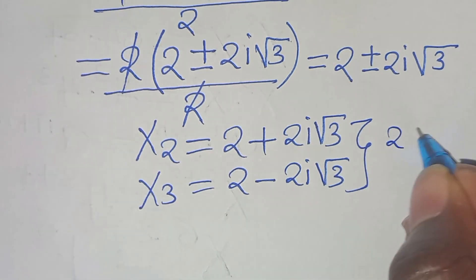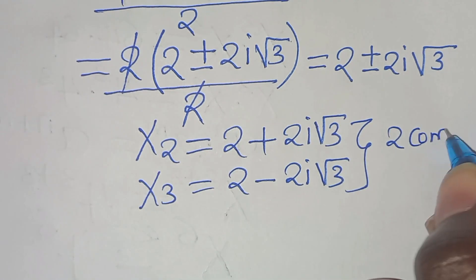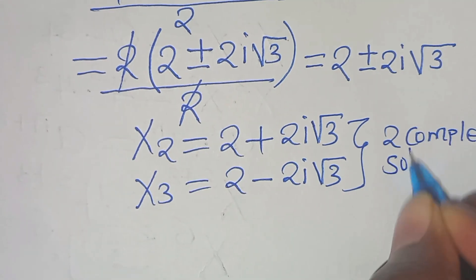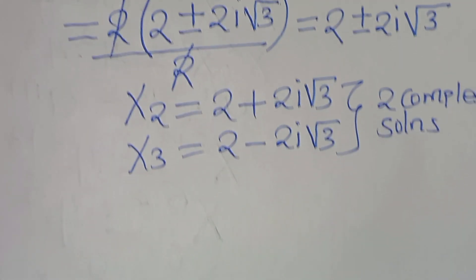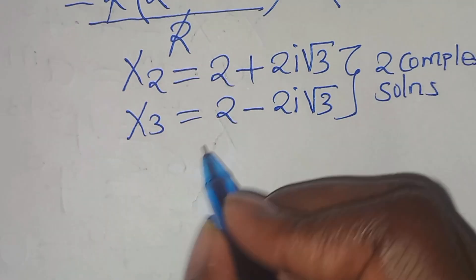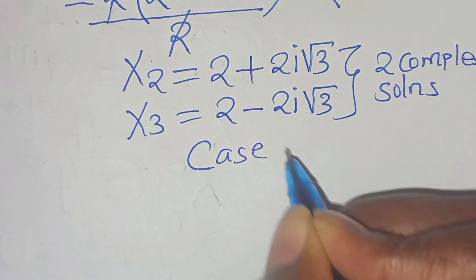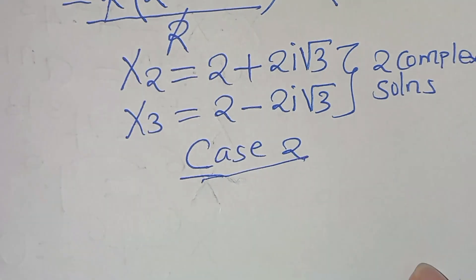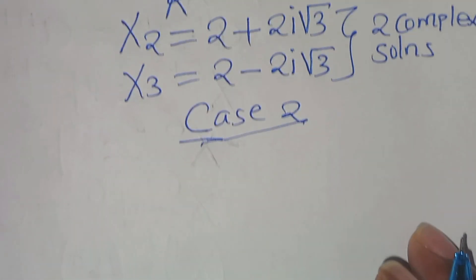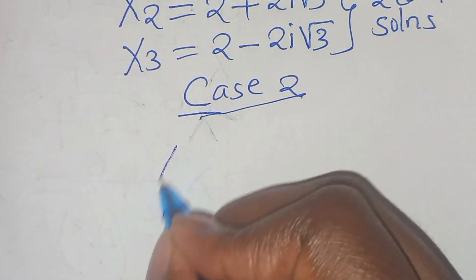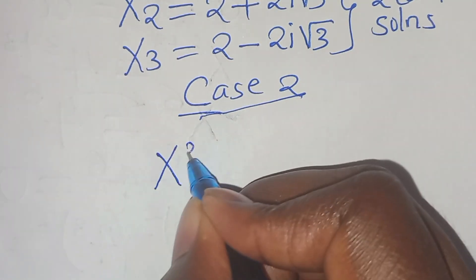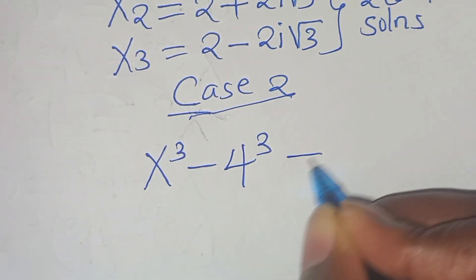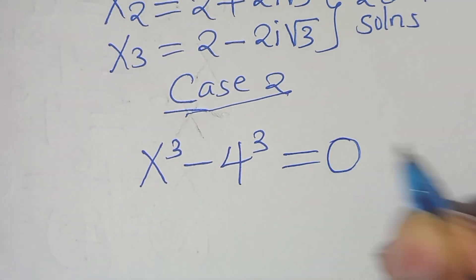These are 2 complex solutions under case 1. Now let's proceed to case 2, where we have x to the power of 3 subtract 4 to the power of 3, this is equal to 0.